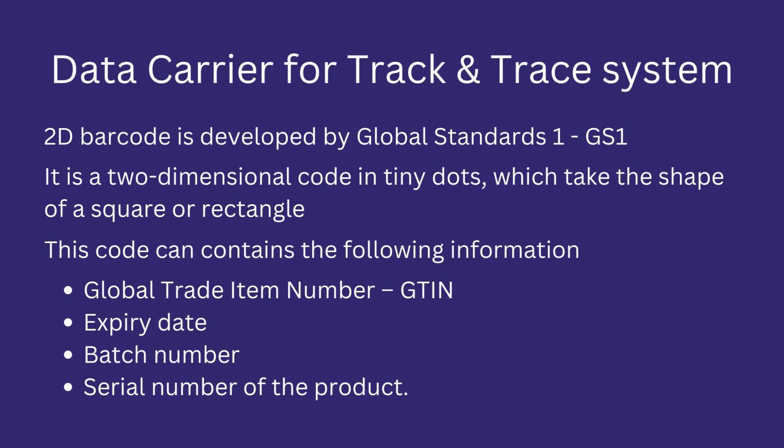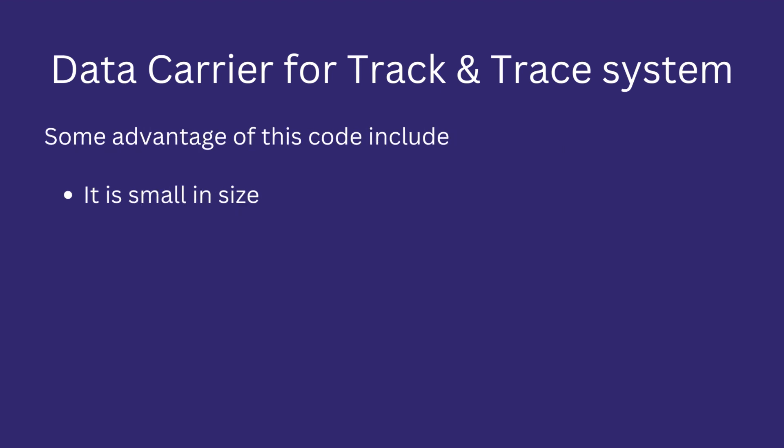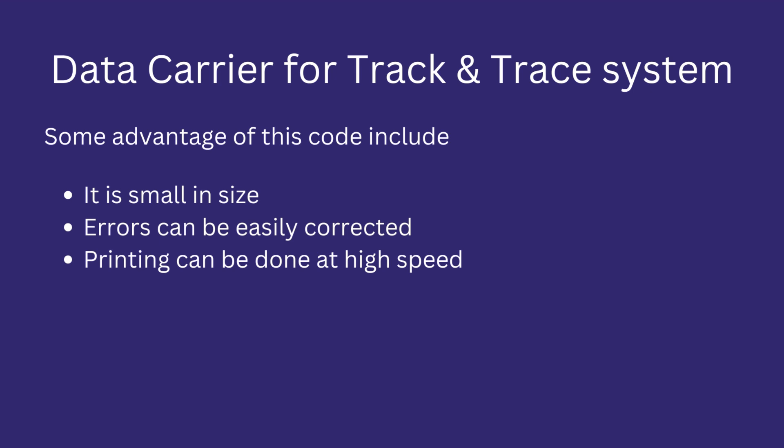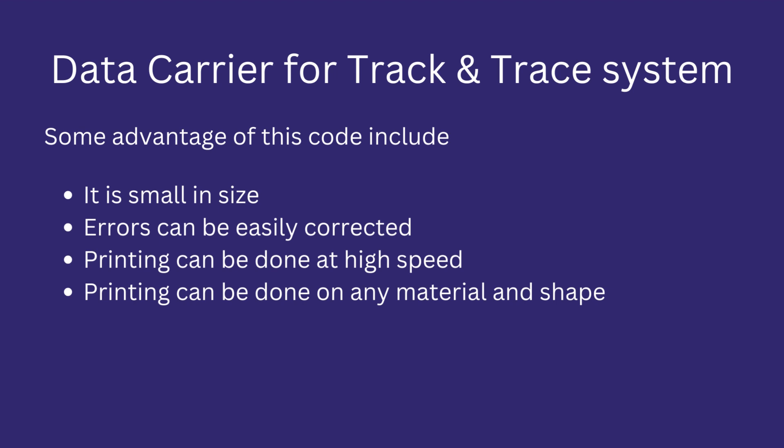This code can contain information such as the Global Trade Item Number (GTIN), expiry date, batch number, and serial number of the product. Advantages of using 2D barcode include: it is small in size and can be easily printed on small products or packaging without losing any information. If wrong information is entered in the code, it can be easily corrected, which is difficult in other data formats. The printing of 2D barcode can be done at high speed without losing any information, which is particularly helpful in high speed machines. This code can also be printed on any material or any contour.